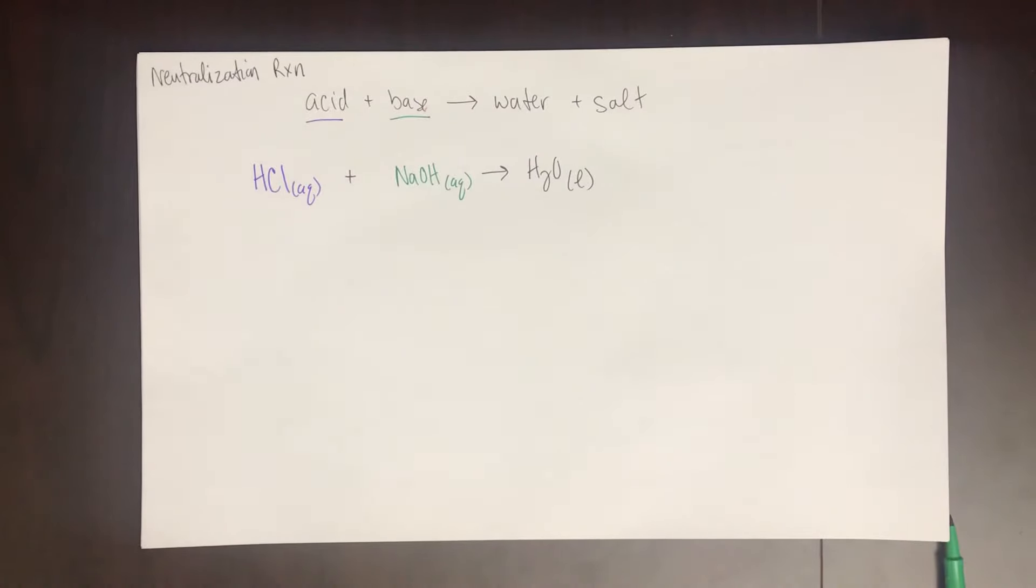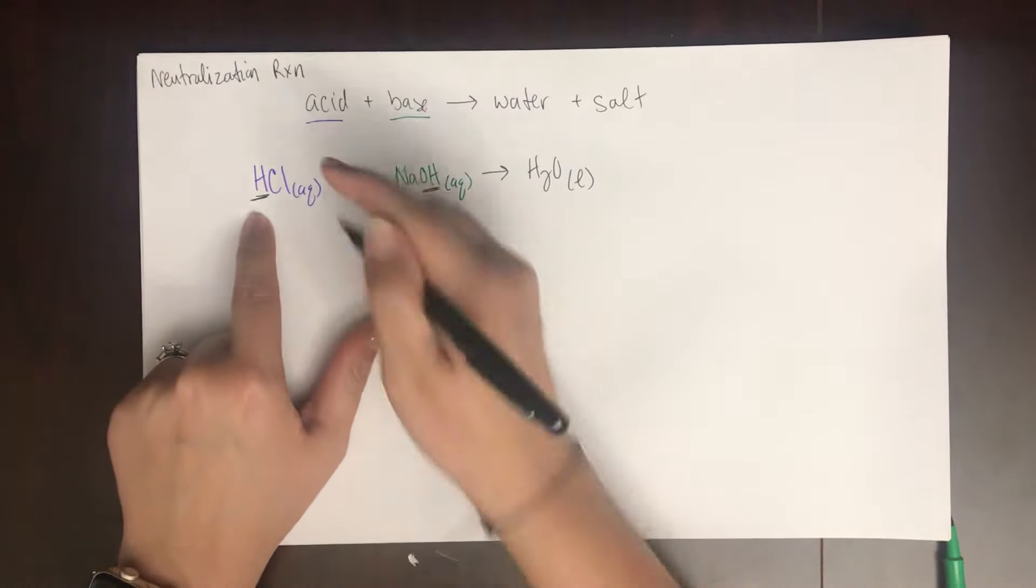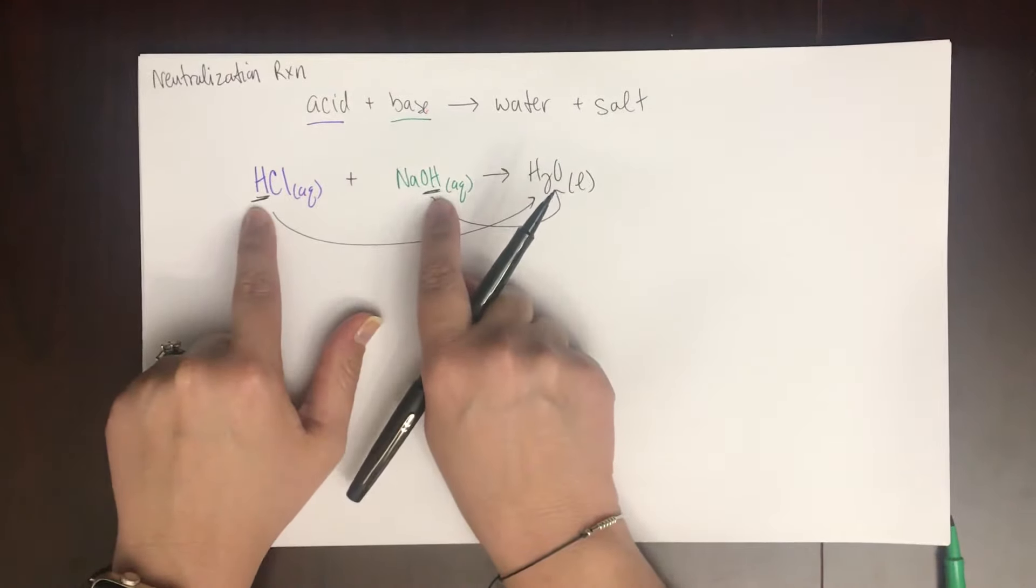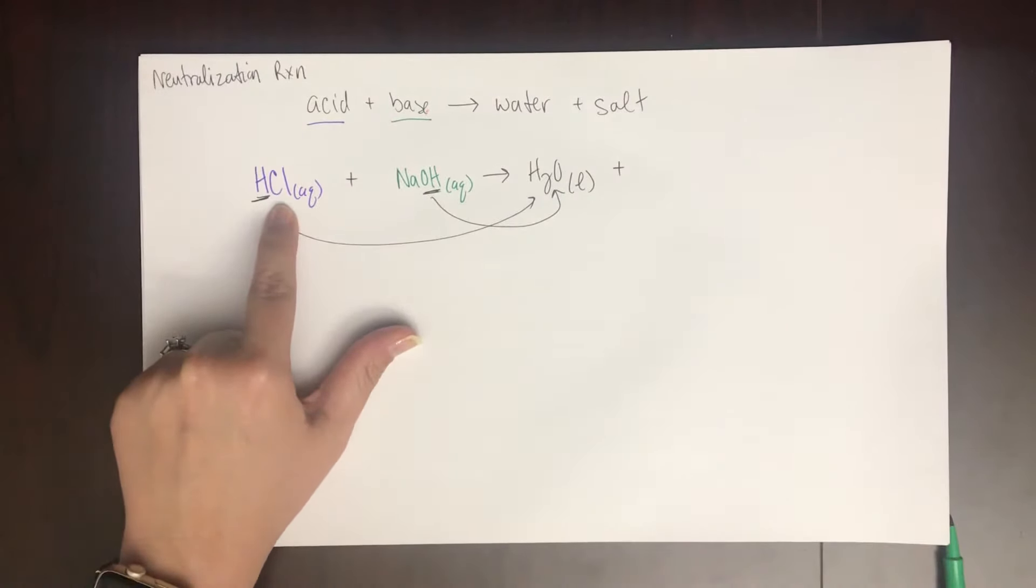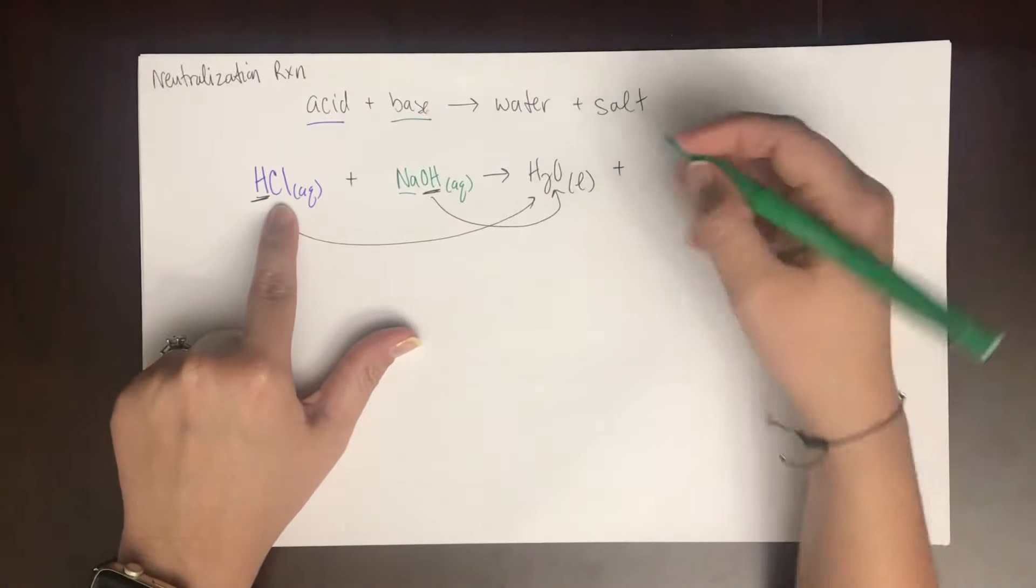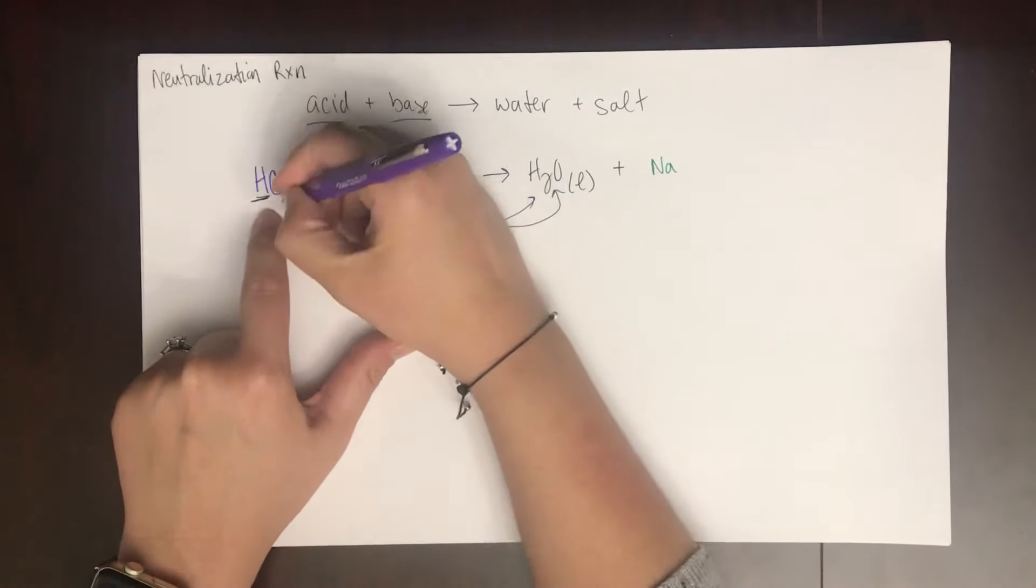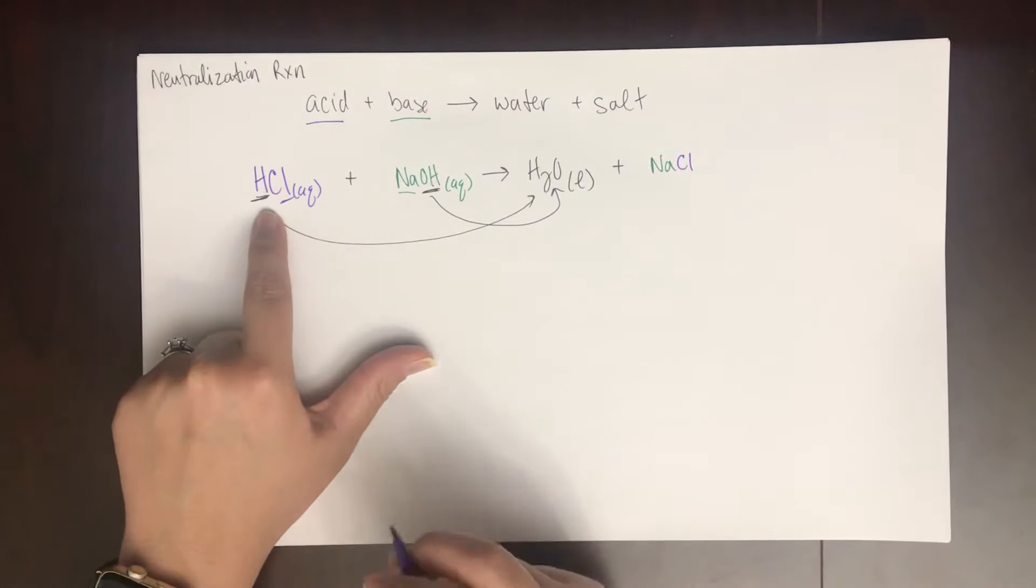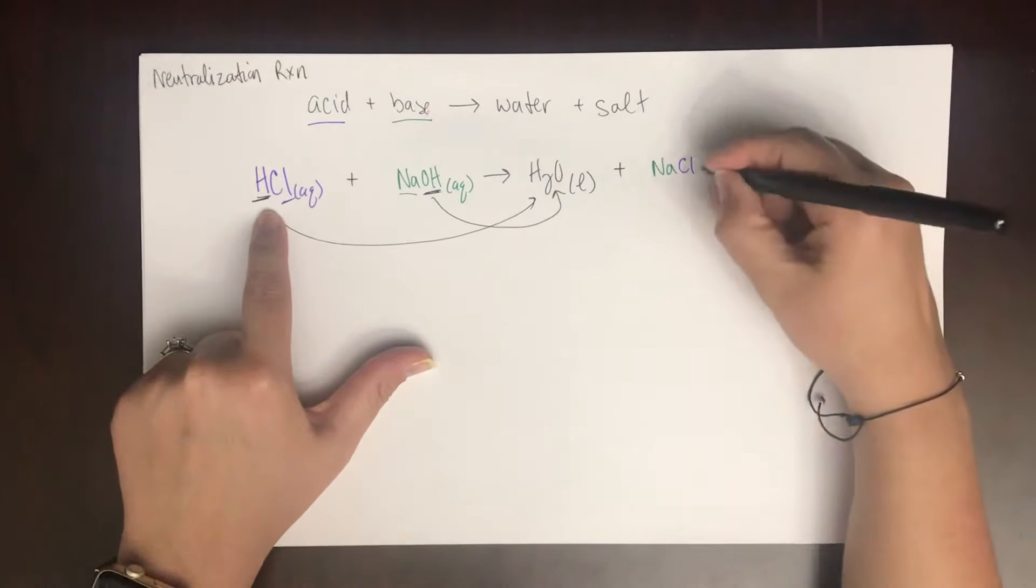So the salt is going to be what's left over. So essentially the hydrogen from the HCl and the hydroxide are going to form water. HOH, same thing as H2O. So now what I have left to form my salt is the sodium from the base and the chloride from the acid. So now we're going to look up NaCl in the solubility rules, and we will find that it is also aqueous.